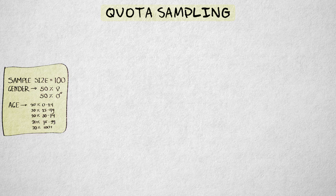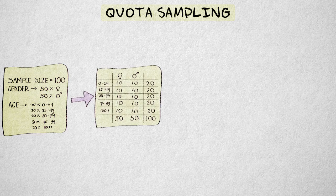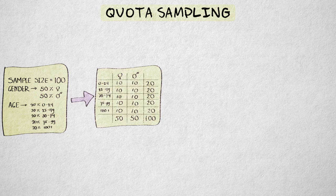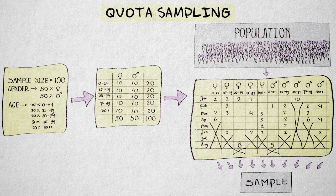The relative size of each category in the population is obtained from a National Statistics Institute, for example. This information is used to calculate how many participants are needed in each category so that the relative category sizes in the sample correspond to the category sizes in the population.